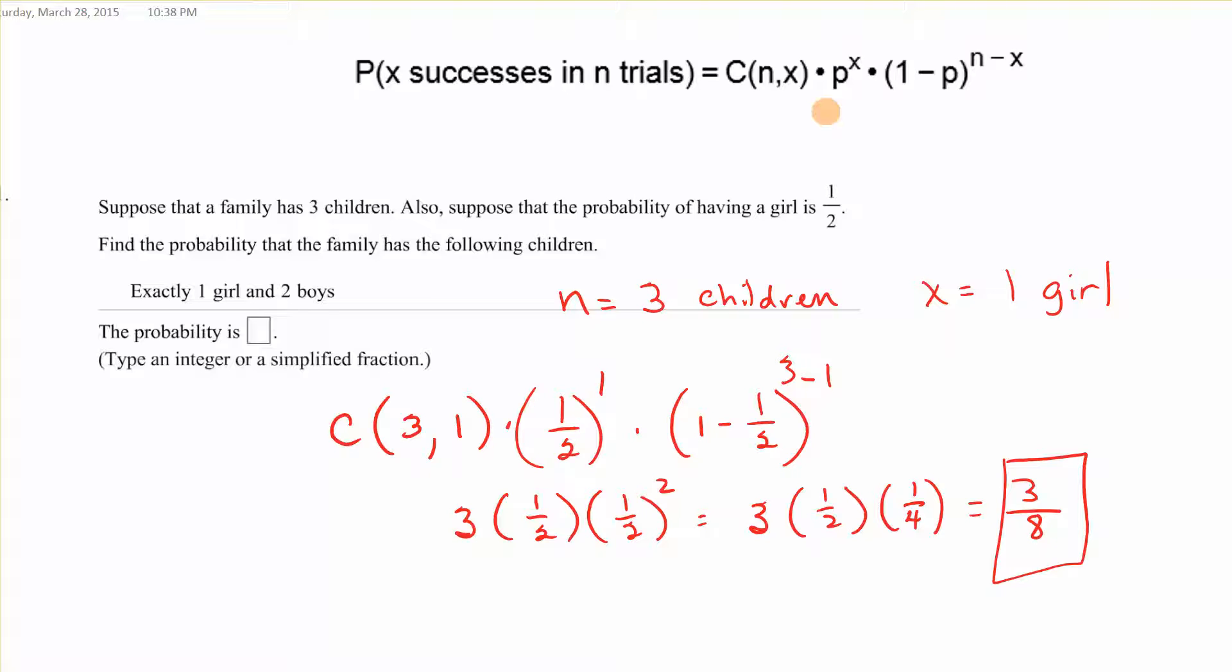Exactly 1 girl and 2 boys. So N is 3 children, X is 1 girl. C of 3 taken 1 at a time times 1 half which is the probability of having a girl to the first power times 1 minus 1 half to the 3 minus 1. You figure that out, so we're down here to 3 eighths. We did it all in fractions which is what it wanted. So out of the 3 children to have exactly 1 girl this is the probability.